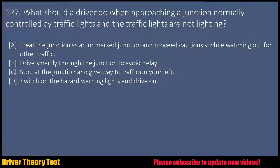Question 287: What should a driver do when approaching a junction normally controlled by traffic lights and the traffic lights are not working? a. Treat the junction as an unmarked junction and proceed cautiously while watching out for other traffic. b. Drive smartly through the junction to avoid delay. c. Stop at the junction and give way to traffic on your left. d. Switch on the hazard warning lights and drive on.